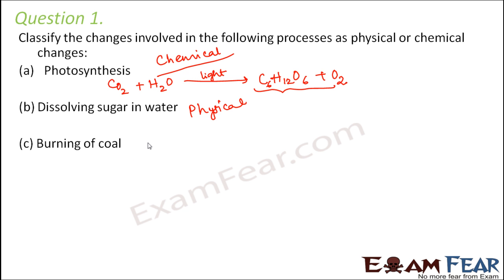Burning of coal is again a chemical change, because when we burn coal, a lot of heat is released, light is released, and ashes are produced. So chemically, the ashes are different from coal.